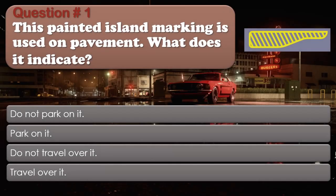Question number 1. This painted island marking is used on pavement. What does it indicate? Do not park on it. Park on it. Do not travel over it. Travel over it. The correct answer is: Do not travel over it.